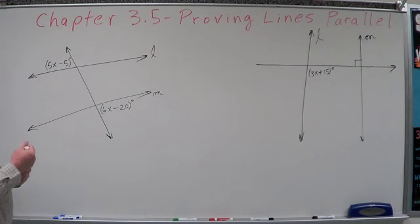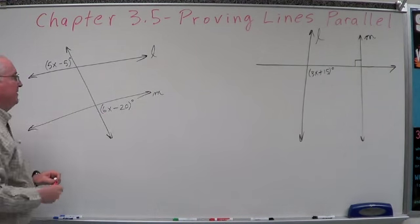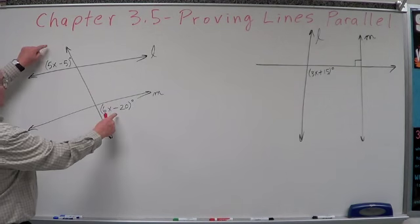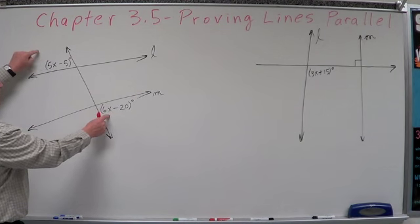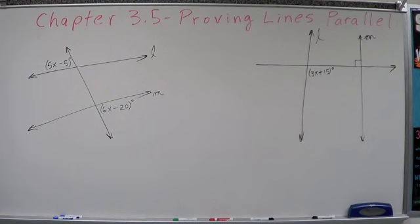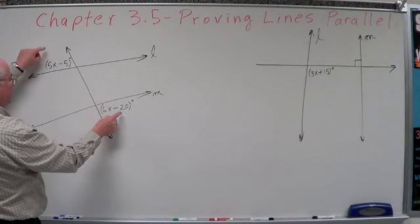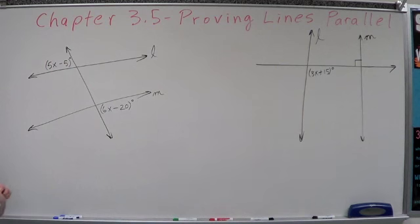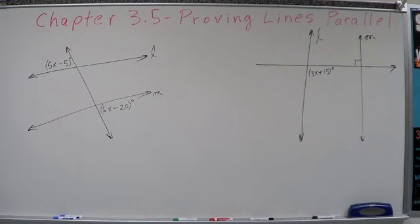In order to do that, we have to determine, in order for L and M to be parallel, we have to determine what these two angles' relationship is. We've got L and M cut by a transversal. What's the relationship between the two angles that have the expressions there? That's how you approach these problems — you determine what the angle pair is, then say, for the lines to be parallel, that angle pair has to meet this requirement.